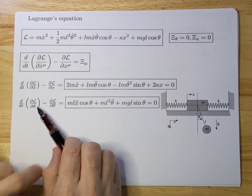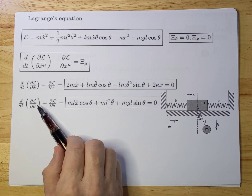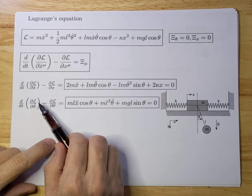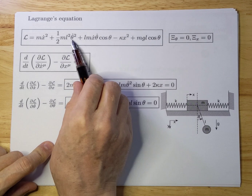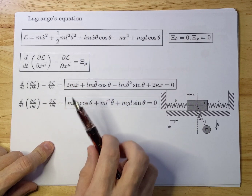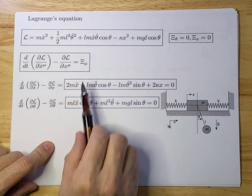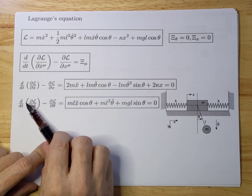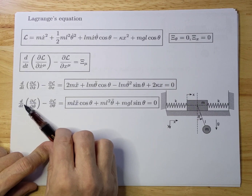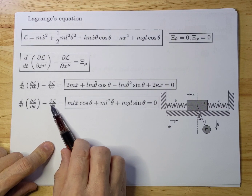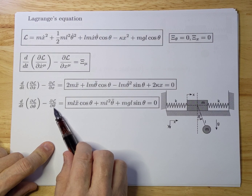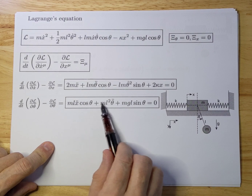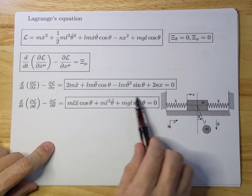Now we go to the second equation. We start differentiating towards theta. We differentiate the Lagrangian with respect to theta-dot and subtract the Lagrangian with respect to theta. Working it out, you get the second equation of motion.